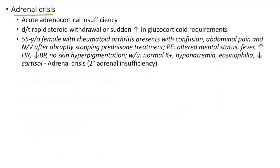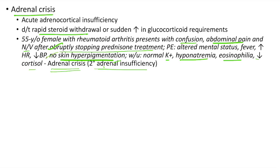Now let us see about adrenal crisis — acute adrenocortical insufficiency. It can occur due to rapid steroid withdrawal or sudden increase in glucocorticoid requirements. Clinical case: A 55-year-old female with rheumatoid arthritis presents with confusion, abdominal pain and nausea and vomiting after abruptly stopping prednisone. Physical examination shows altered mental status, fever, elevated heart rate, low blood pressure, no skin hyperpigmentation. Workup shows normal potassium, hyponatremia, eosinophilia and low cortisol. This is a classic case of adrenal crisis due to abrupt stoppage of prednisone, with no skin hyperpigmentation pointing towards secondary adrenal insufficiency.